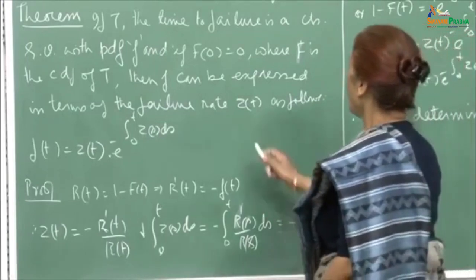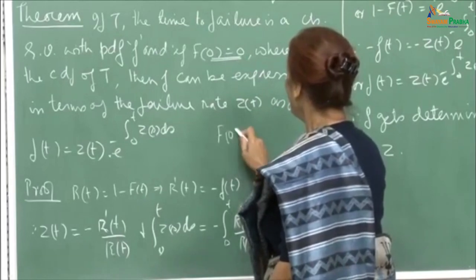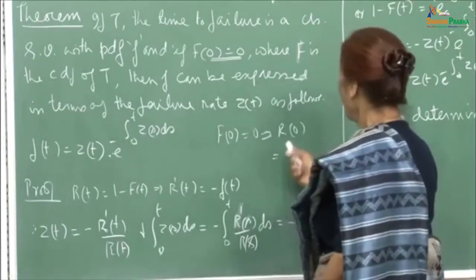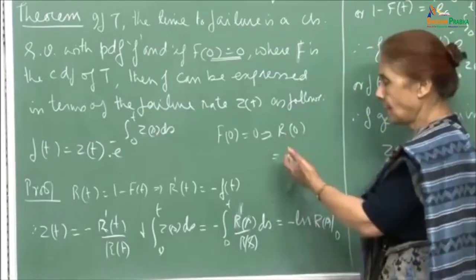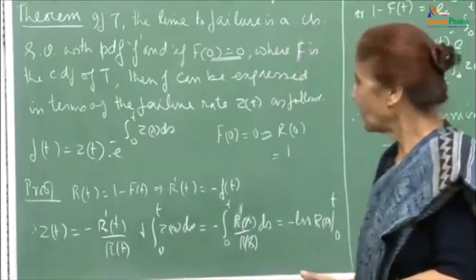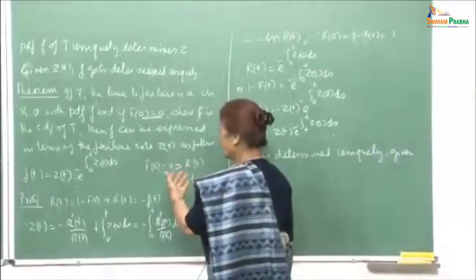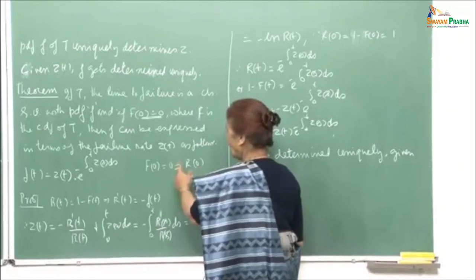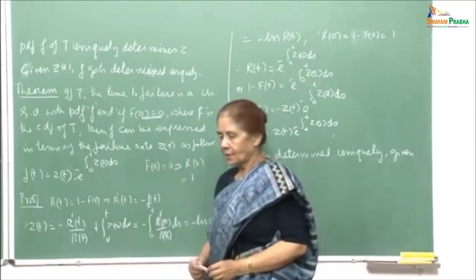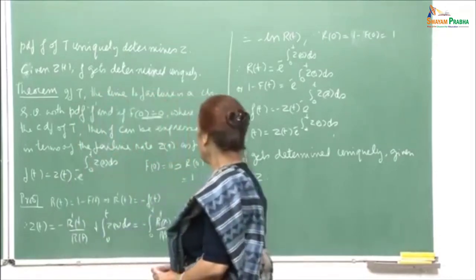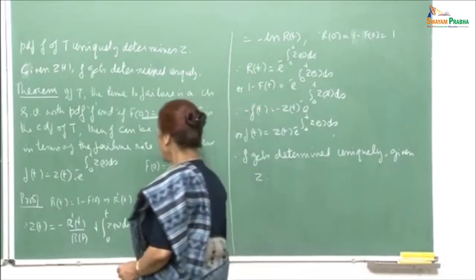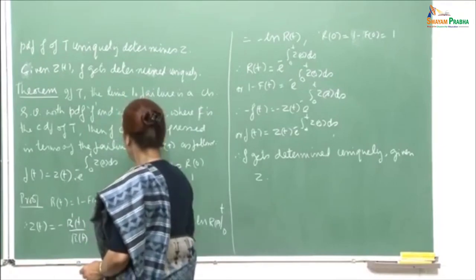The condition F(0) = 0 implies r(0) = 1, which makes sense: at time 0 the system is not going to fail. It requires some time after the system starts functioning before there is a possibility of failure. So reliability is 1 at time 0. This is a reasonable assumption since F(0) = 0, and we are talking about reliability only after the system starts functioning. Some time must lapse before one can say the component has failed.